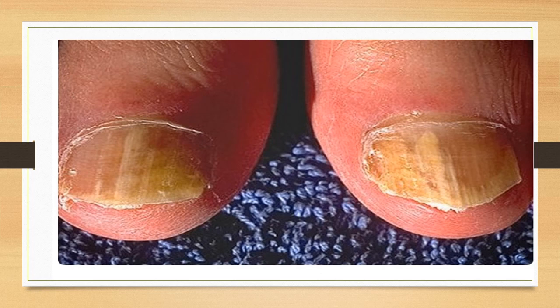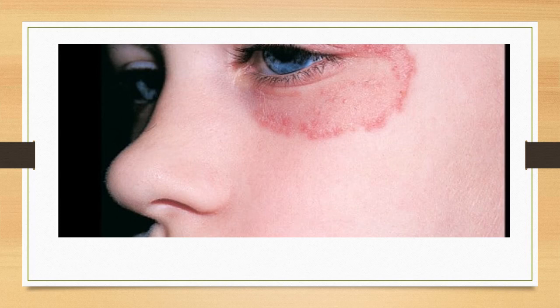Onychomycosis, shown in the diagram, is a fungal infection of the nails where the nails become brittle and yellow. Topical forms alone are not effective; itraconazole is the drug of choice and is prescribed either as continuous or pulse therapy. Pulse therapy reduces side effects. Tinea corporis, ringworm infection on the face, may also require itraconazole or griseofulvin if topical therapy fails.